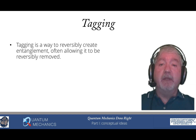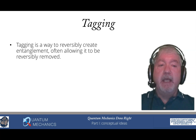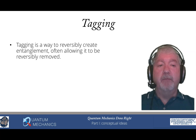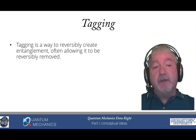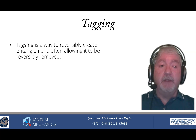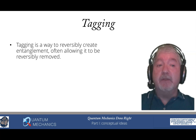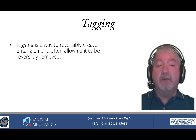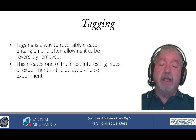Tagging is a concept in which we can reversibly create entanglement and then remove it in a reversible fashion. This is a nice way of both creating and then removing entanglement so I can either get rid of interference or have interference, depending on how I want to create the quantum state I'm working with. In the second quantum revolution, we're actually able to create quantum states and manipulate them in ways that we want to, so this becomes a really important concept to understand.